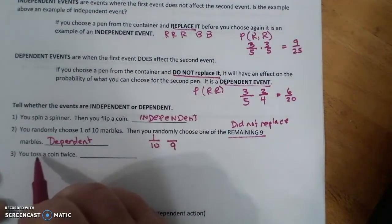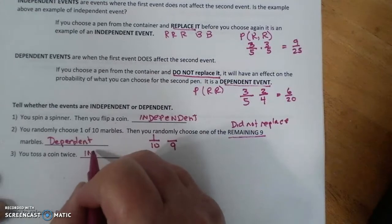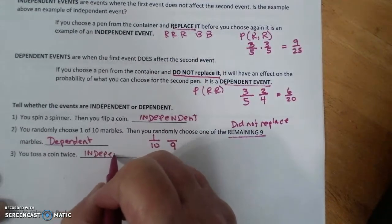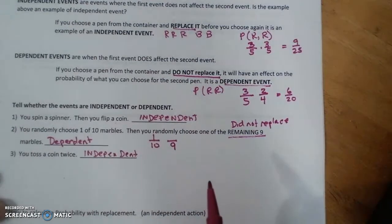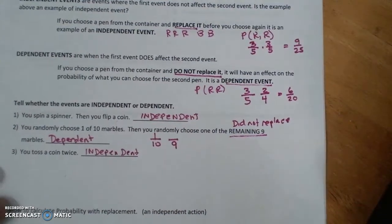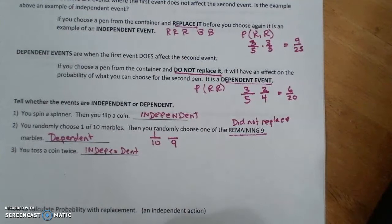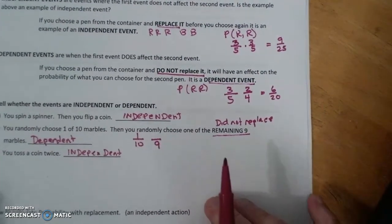You toss a coin twice. Independent. Tossing the second coin has nothing to do with tossing the first coin. The sample space is not decreased and it is not affected.